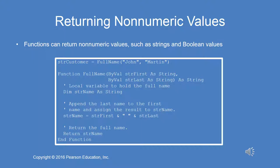It has a local variable declared within the body of the function — that variable is string name. String name equals string first concatenated with a single space and string last, and then it will return string name. That entire return value will replace the function call in the assignment statement at the top of the box.